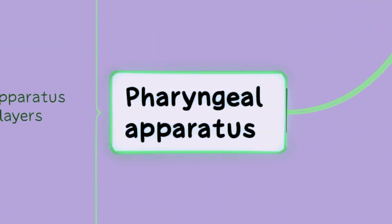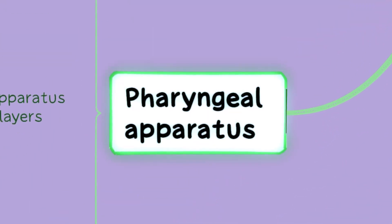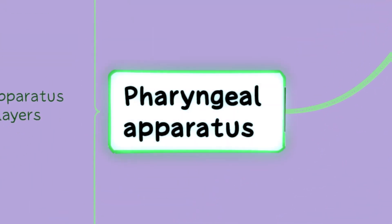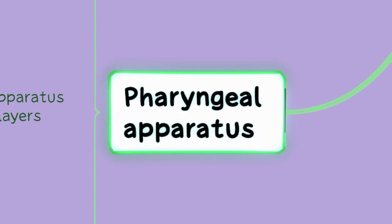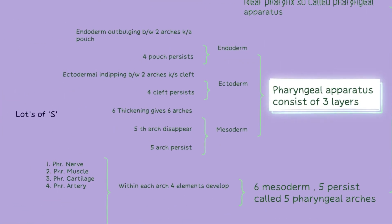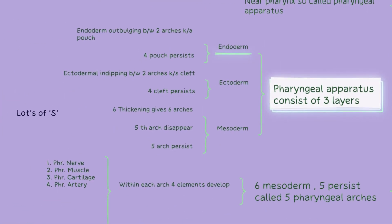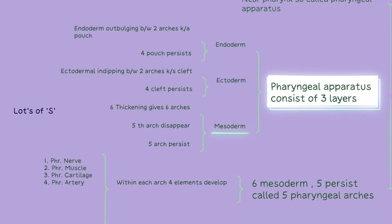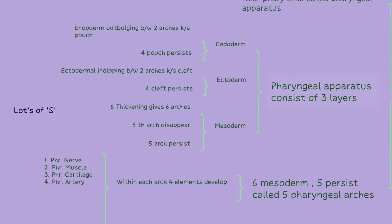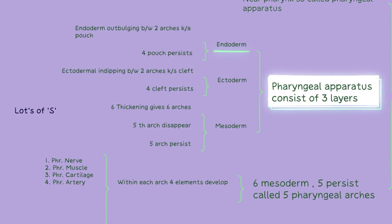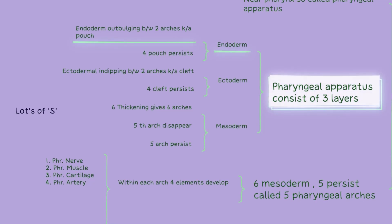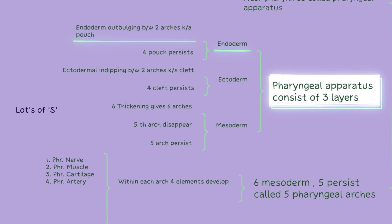First we will talk about the pharyngeal apparatus. It plays a crucial role in the formation of various structures in the head and neck region. The pharyngeal apparatus consists of three layers: the endoderm, ectoderm and mesoderm. The endoderm is the innermost layer of the pharyngeal apparatus.